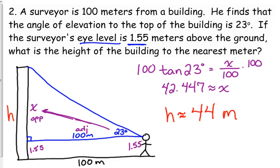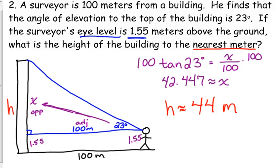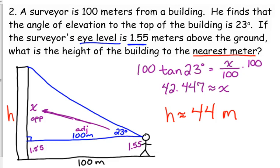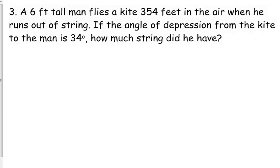Now please, please, please always remember to look at what they want you to round to and make sure that you include units as well. Always make sure that you do that. All right, last example we're going to do today together. Well, I do have one more, but for right now. A six foot tall man flies a kite 354 feet in the air when he runs out of string. The angle of depression from the kite to the man is 34 degrees. How much string did he have?